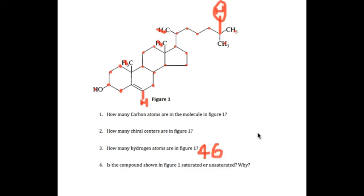And question four is the compound shown in figure one saturated or unsaturated. So the compound is unsaturated and why. Why is this, because you can see here's a double bond. So when something has a double bond straight away, you can assume that it's unsaturated.